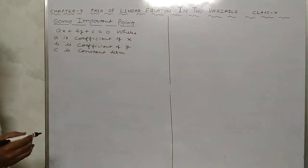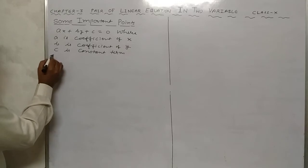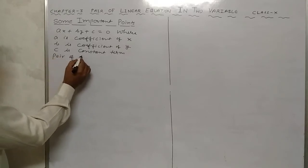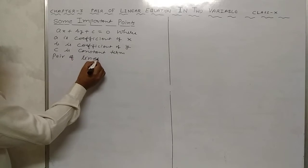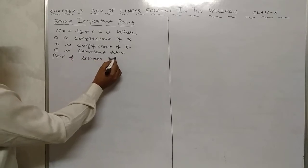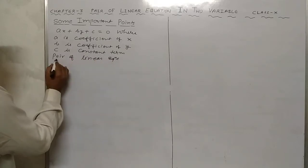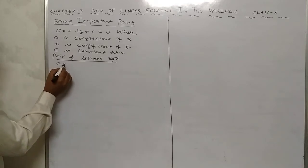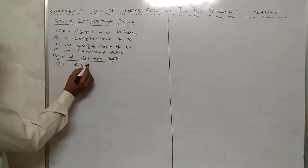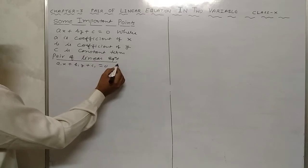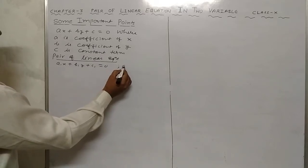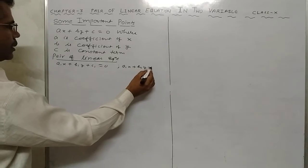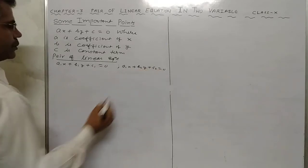A pair of linear equations is given by: a1x plus b1y plus c1 equals to 0, and a2x plus b2y plus c2 equals to 0.